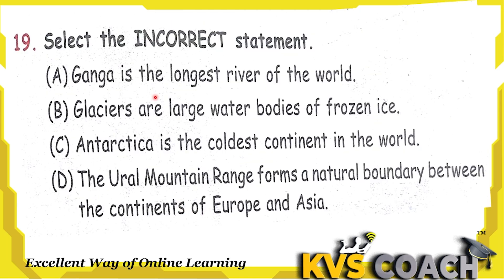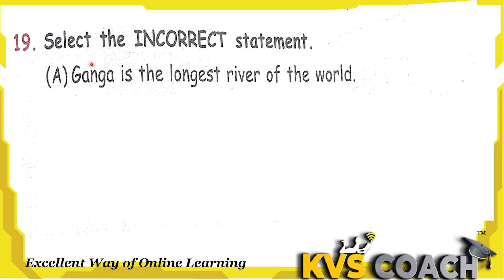Next question: select the incorrect statement. Please pay attention — it is asking for the incorrect statement. Option A, Ganga is the longest river of the world — no, the Nile river is the longest river of the world, so this is incorrect. Option B, glaciers are the largest water body of frozen ice — correct. Option C, Antarctica is the coldest continent — correct. Option D, the Ural mountain range forms a natural boundary between Europe and Asia — correct. So the wrong statement is option A.